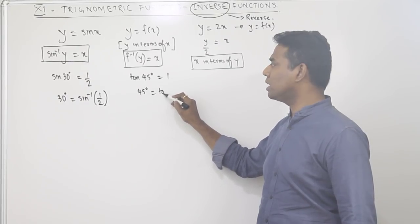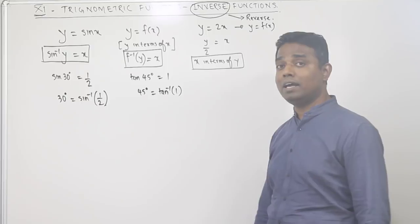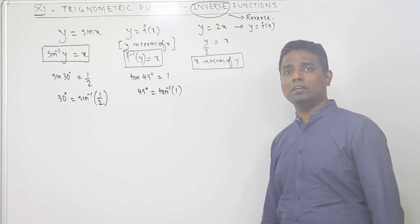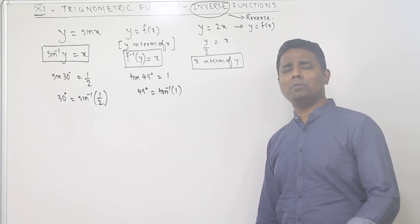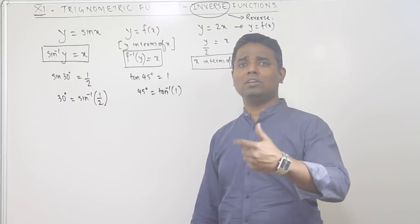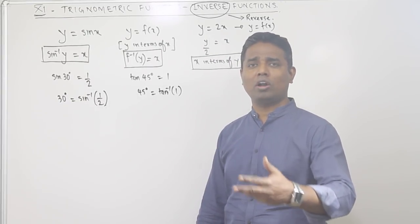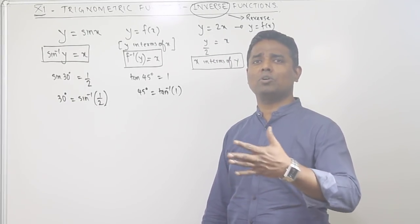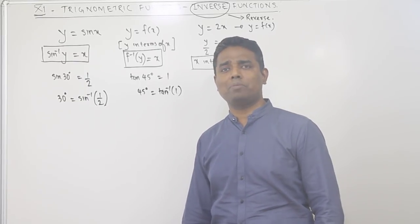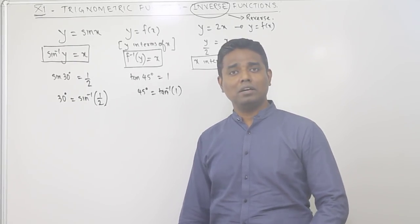Similarly, if tan 45 degrees equals 1, shifting tan gives us 45 degrees equals tan inverse of 1. You can do the same thing with sine, cos, tan, cot, sec, and cosec — all the trigonometric ratios. It is applicable to all of them.